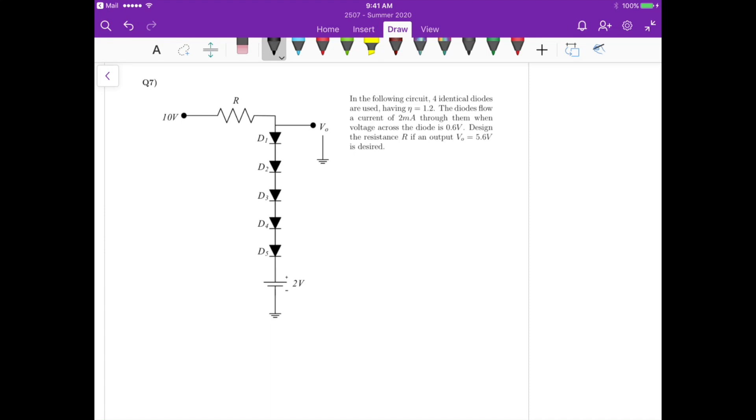For question 7 we have to design the resistor R in order to get the proper current flowing through the diodes that gives us the voltage in each one of the diodes that allows to have an output voltage of 5.6 volts.